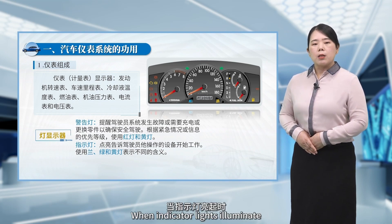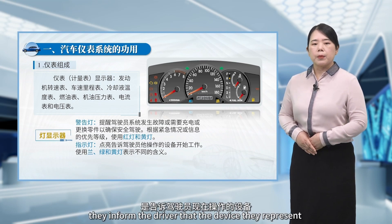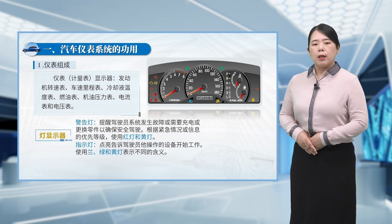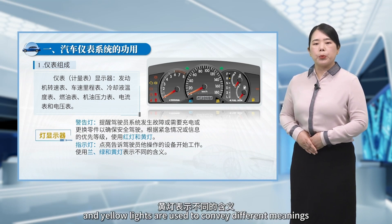When indicator lights illuminate, they inform the driver that the device they represent is now in operation. Blue, green, and yellow lights are used to convey different meanings.